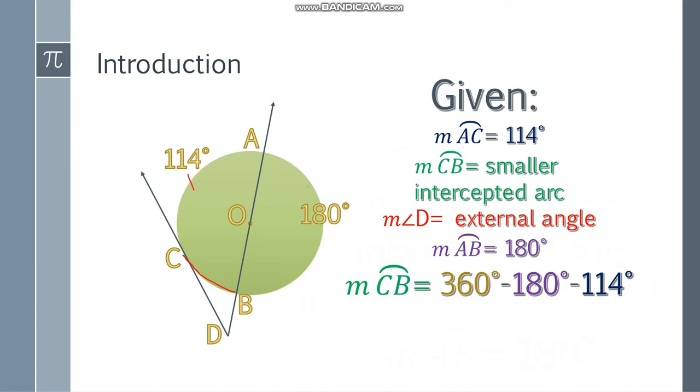We have part A, part B, part C. So just subtract it. 360 minus 180 minus 114 and you will get the last part of the circle, which is arc CB or the smaller intercepted arc. So 360 minus 180 degrees minus 114 degrees, that will be 66 degrees.